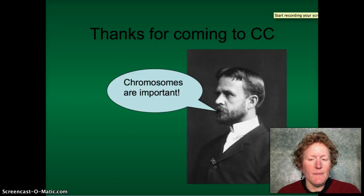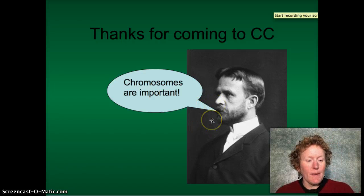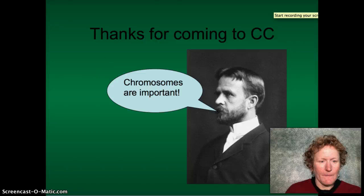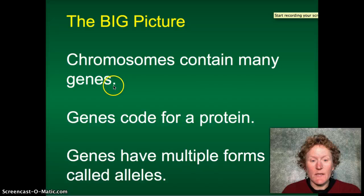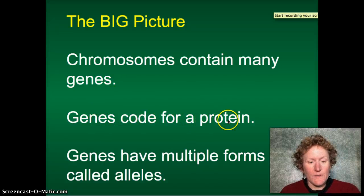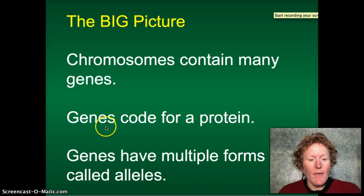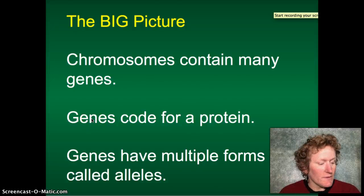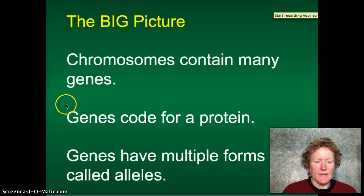Thanks for coming to this video. Remember: chromosomes are important. Chromosomes contain many genes. Genes code for proteins. Genes can have multiple forms called alleles, so you can make more than one kind of a protein. And different genes are expressed in different types of cells — your liver cells are only going to express the liver cell genes, not the heart cell genes. Thanks a lot.